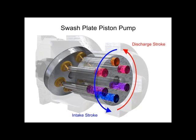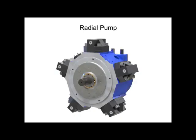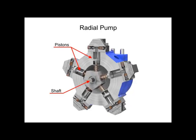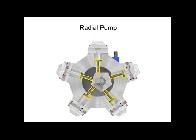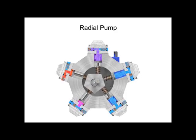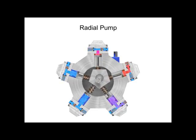Radial pumps are designed so the pistons stroke in a direction at right angles to the shaft. The pistons are arranged like wheel spokes around a cylinder block with an eccentric central cam mounted on a drive shaft. As the shaft rotates, the cam moves towards the pistons, forcing them down into the cylinder block and discharging the fluid. As the cam moves away, springs help retract the piston and cause the intake stroke.